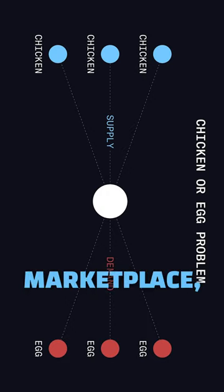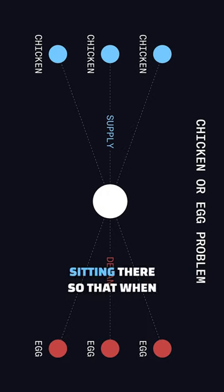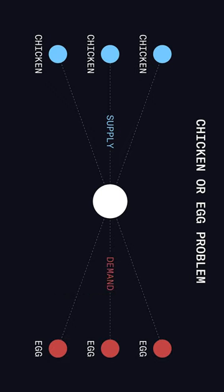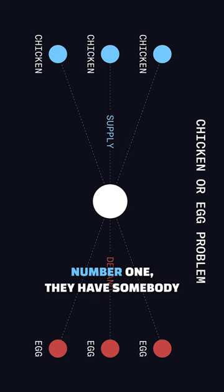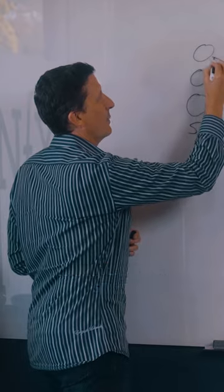So if you want to build a marketplace, you have to get enough supply sitting there so that when you bring in your first demand, number one, they have somebody to look at and see if they want to buy their stuff.